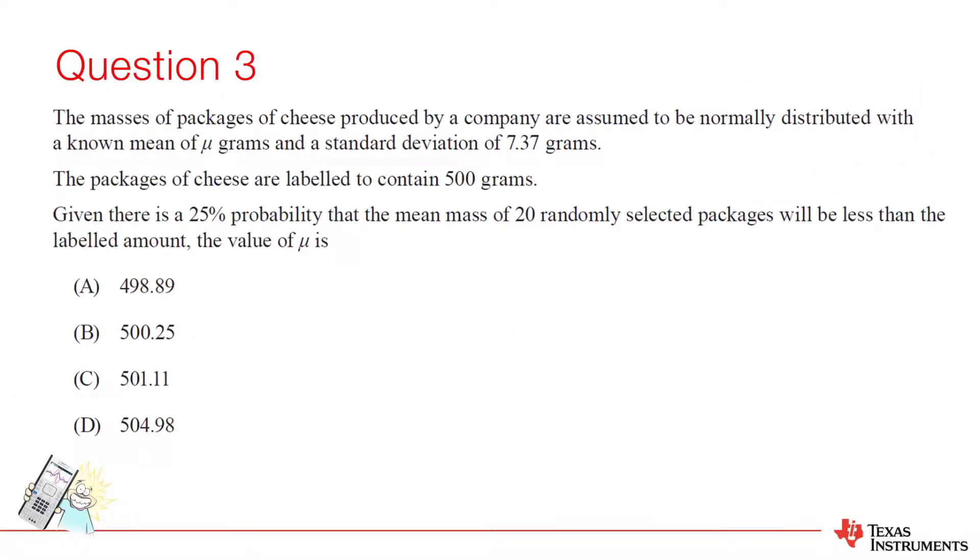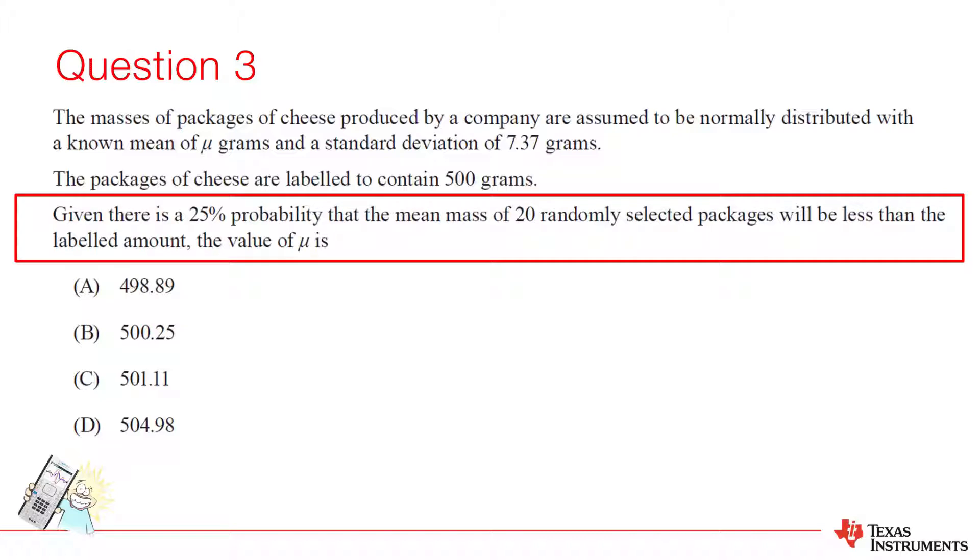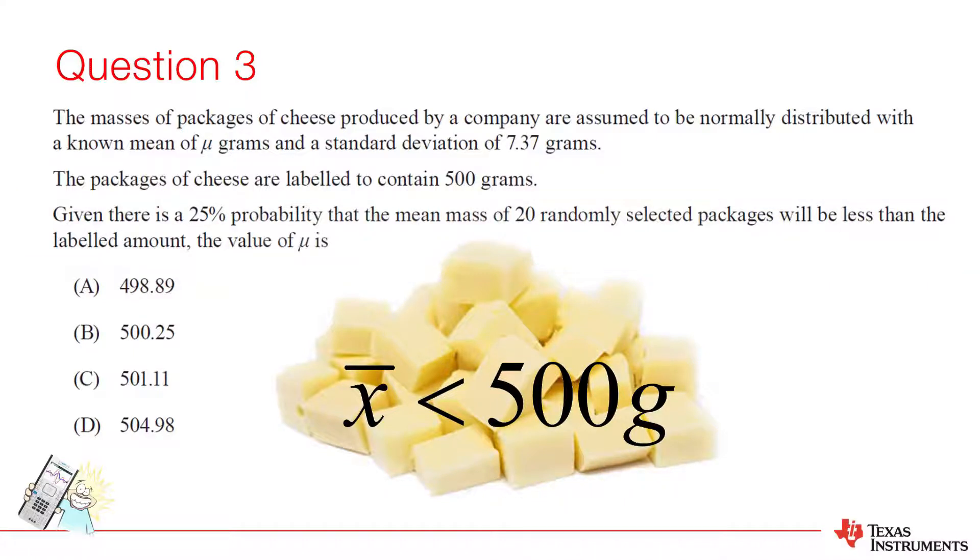Question 3. This question is about the normal distribution, where the probability is known and we need to determine one of the parameters. However, there is some important detail in the wording. We are told there is a 25% probability that the mean of 20 packets of cheese will be less than the labeled amount. This is very different than saying 25% of packets are underweight.